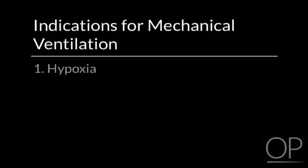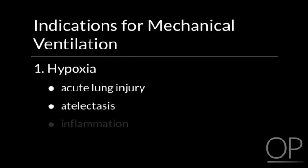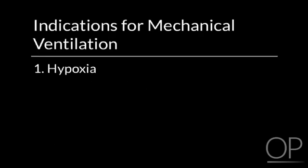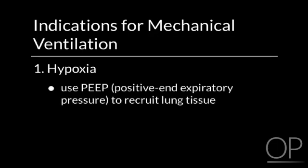Let's start with indications for mechanical ventilation. There are three fundamentally different reasons why somebody needs to be on a mechanical ventilator. A patient might be on the ventilator because his primary problem is hypoxia. Hypoxia is often caused by acute lung injury — the patient has atelectasis, inflammation, and may have an alveolar to arterial O2 gradient. The main approach is to ventilate the patient with adequate PEEP to recruit most of his atelectasis and improve his oxygenation.